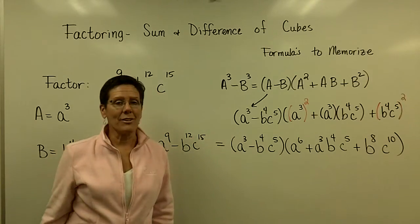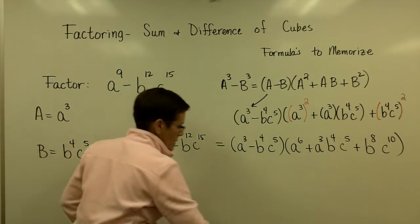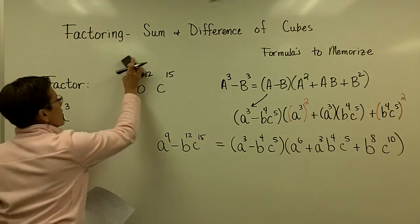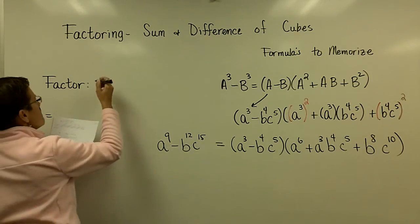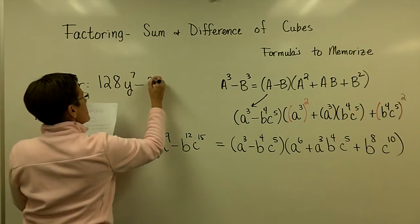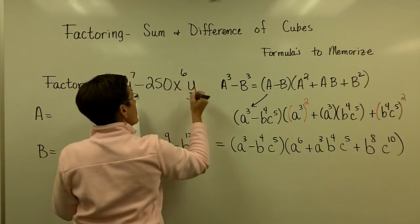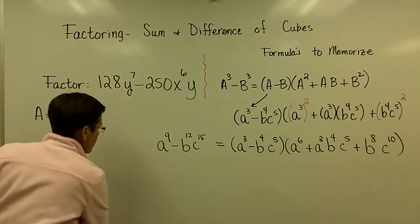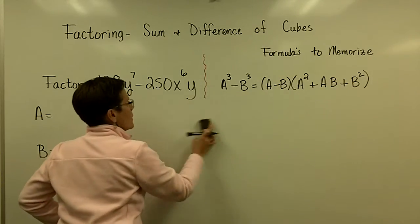You could multiply it out to check if you're correct. Kind of a hard one. All of these divisible by three tells me it's a cube problem. Let's do one more. The problem I have for you is 128 Y to the seventh minus 250 X to the sixth Y. I'm going to put a little line here between my memorized formula and my actual problem.